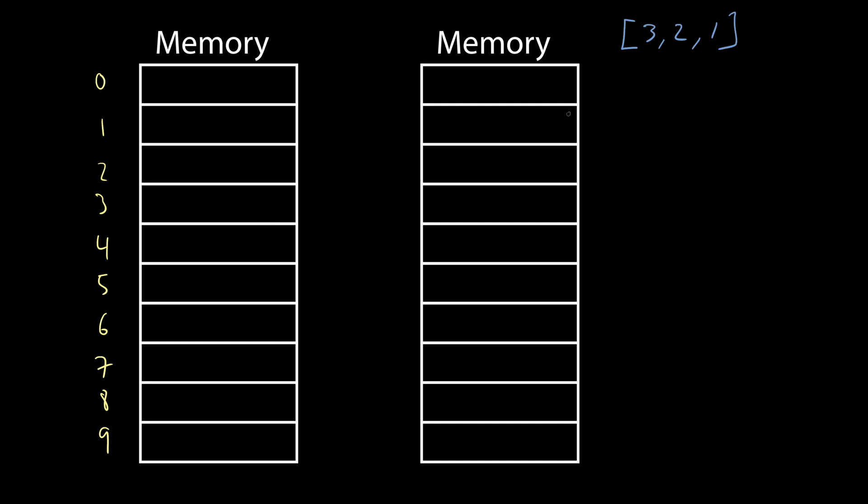So in memory, if it's an array, what would it look like? It would look something like this. In the first slot, we have the number three. The second slot, we have the number two, and then the third slot, we have the number one. Three, two, one.